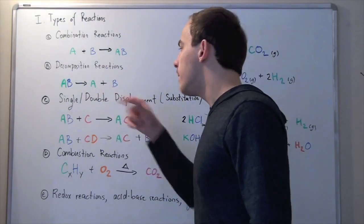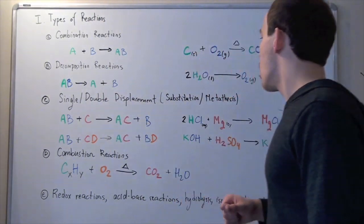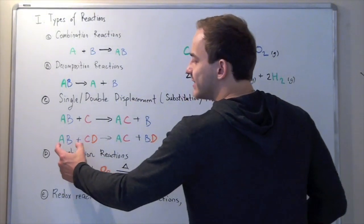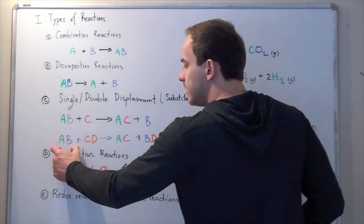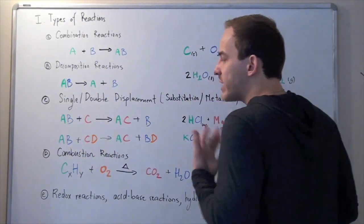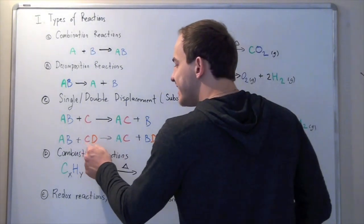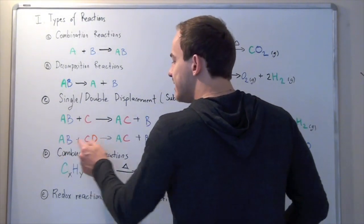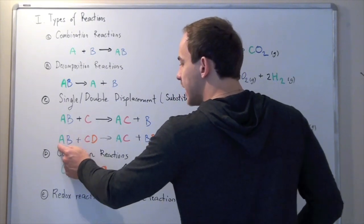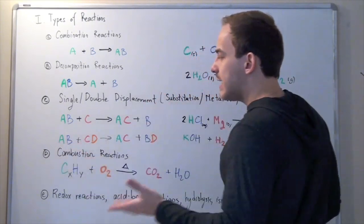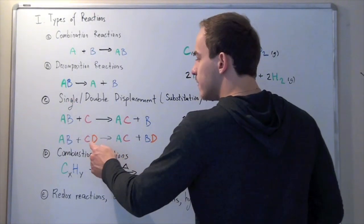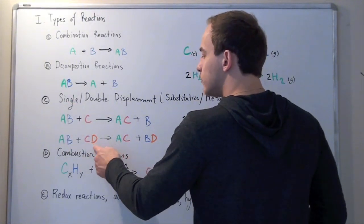Now let's look at a double displacement, or metathesis reaction. We have reactant AB react with reactant CD. What happens is C displaces B — kicks off B, forming a bond with A — and at the same time, B kicks off C, forming a bond with D.